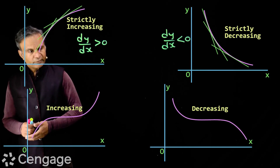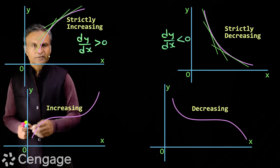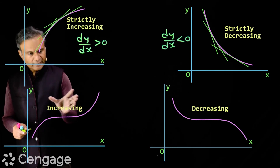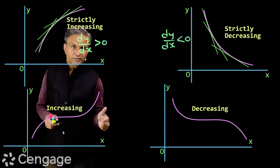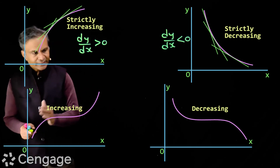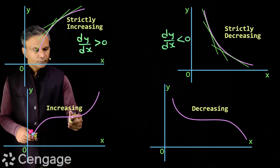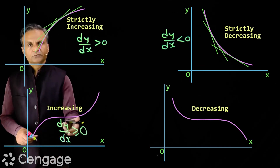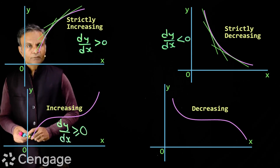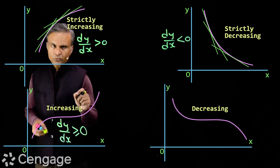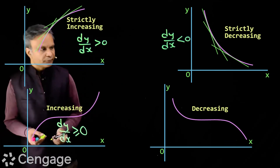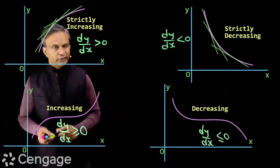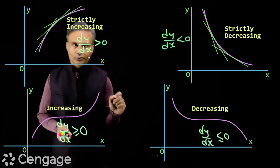For the increasing (non-decreasing) function, the derivative will be either greater than 0 or equal to 0. Between a and b the derivative is 0 because the graph is parallel to the x-axis, and for x less than a and x more than b the derivative is positive. So dy/dx ≥ 0 for an increasing function. Similarly, for a decreasing function, dy/dx ≤ 0.